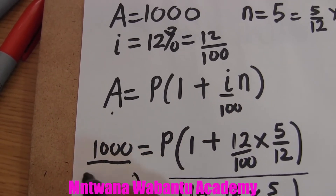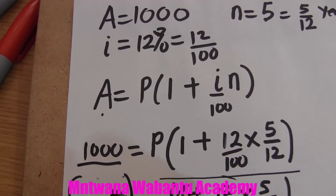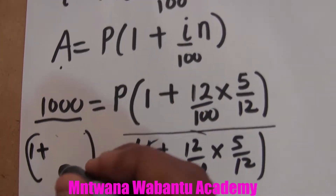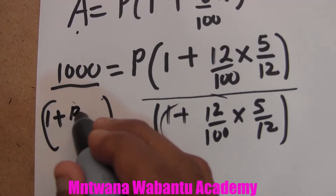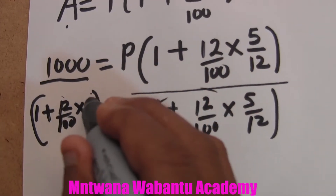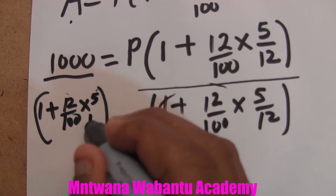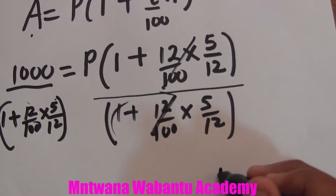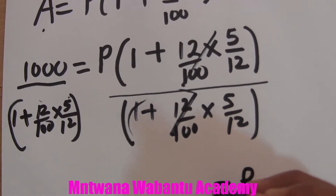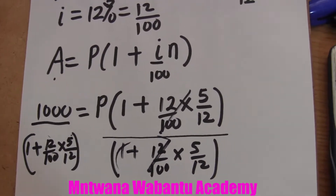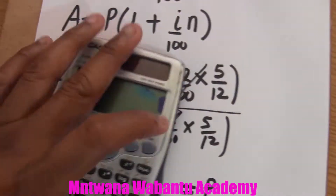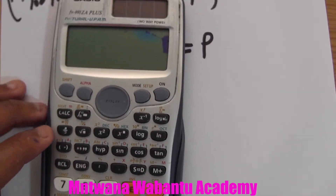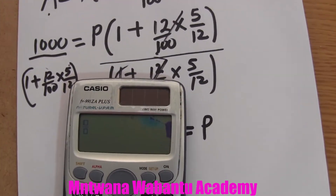So we divide both sides: P equals 1000 over (1 plus 12/100 times 5/12). This side and that side cancel, giving us the value of P. Let me show you how to plug this into a calculator, because some students don't know how.